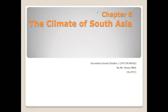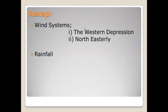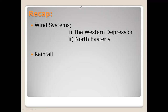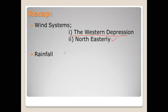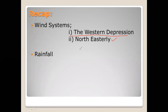Recap: in the previous lecture we discussed two wind systems. As you know, there are three main wind systems. The South West monsoon from July to September, which we discussed in Lecture 1. In Lecture 2 we studied about the other two main wind systems: the Western Depression from December to March, and the North Easterly.